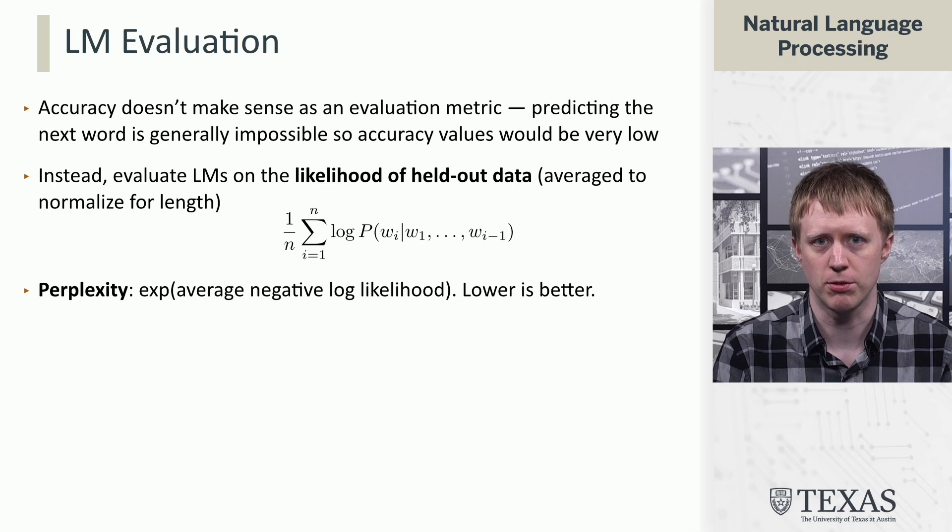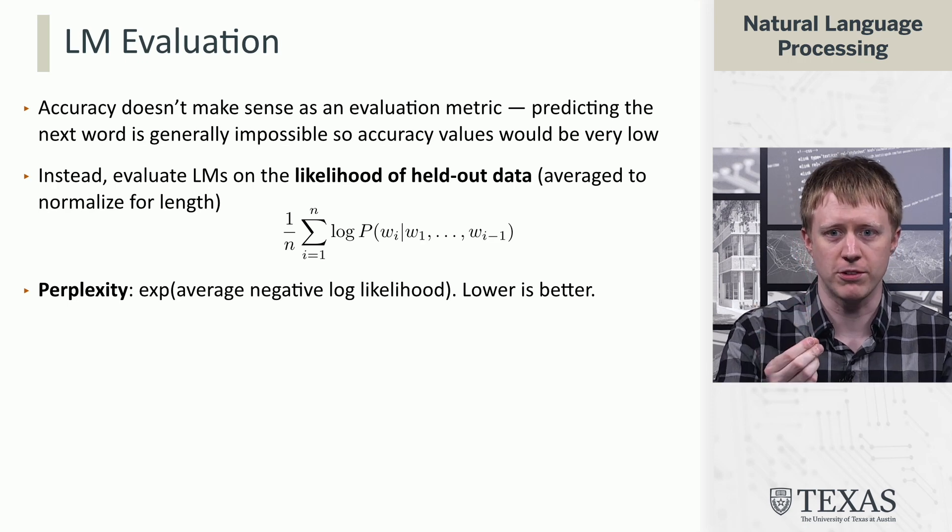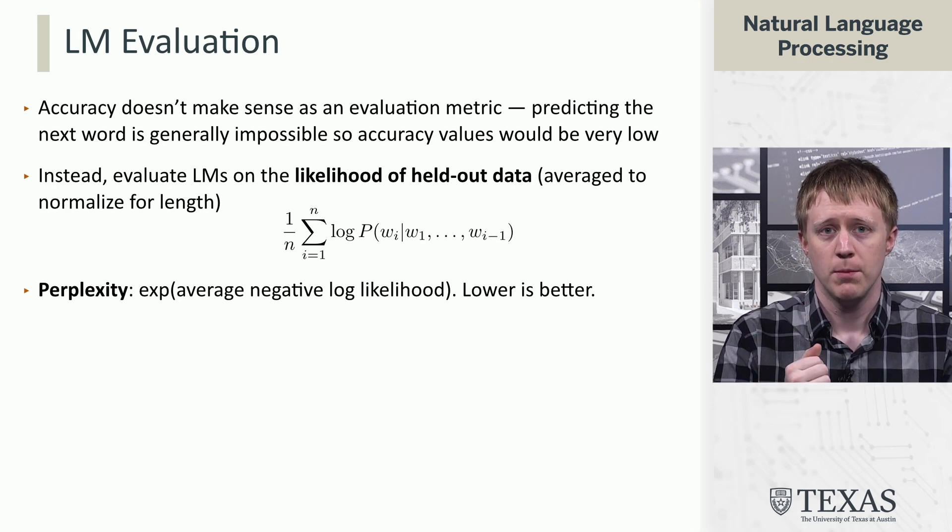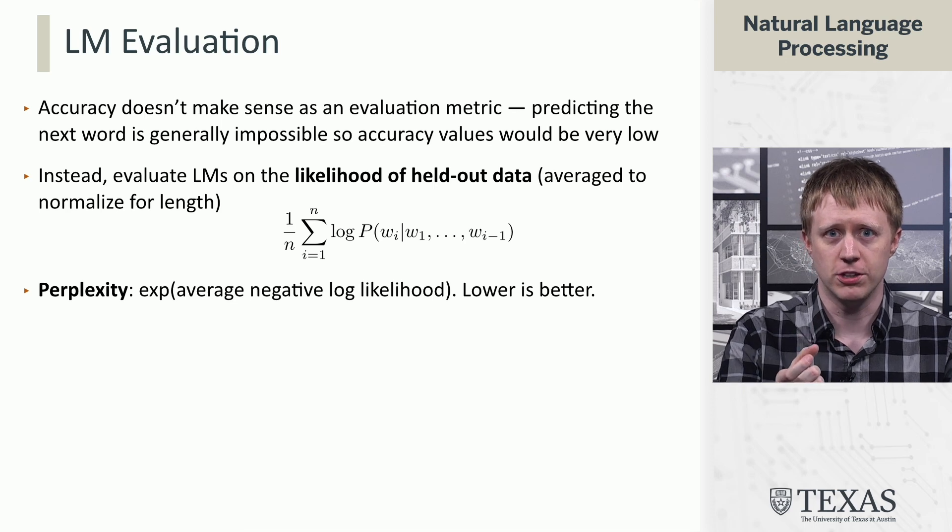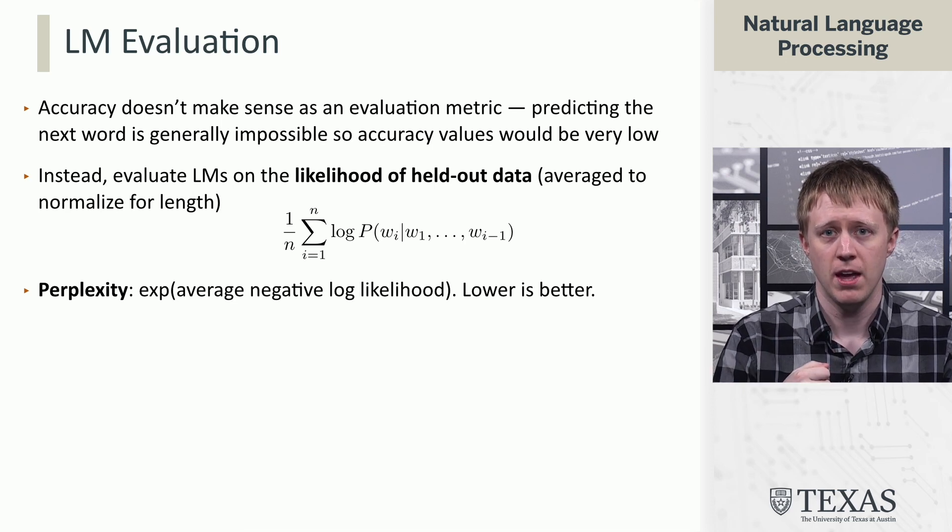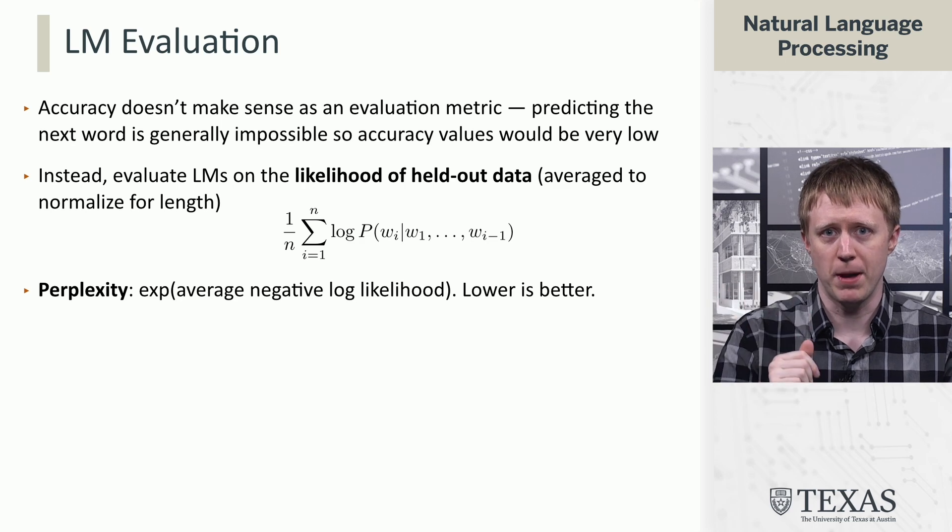Now, the way that this actually gets reported is in a slightly different metric still called perplexity. Perplexity is the exponential of the average negative log likelihood. So this is a metric where lower is better.